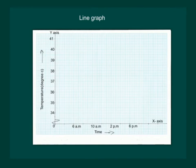Now let us plot a line graph for this example. Let us take a graph paper, make an x-axis and y-axis on it. Mark the time 6 am, 10 am, 2 pm and 6 pm on the x-axis and temperature on the y-axis.